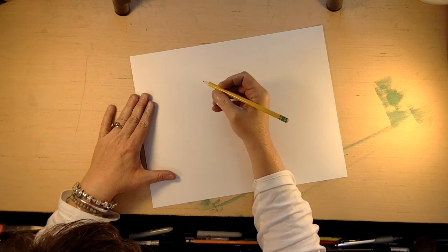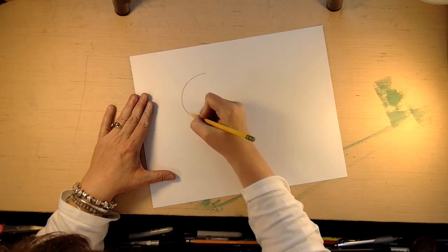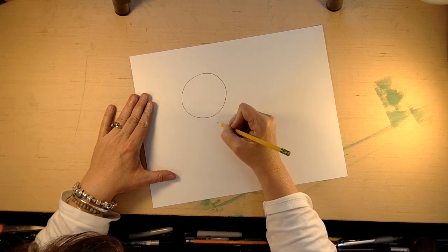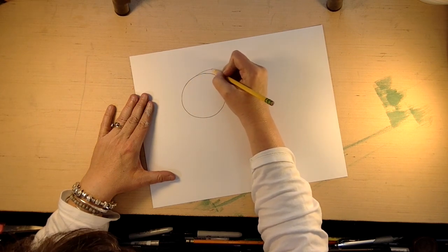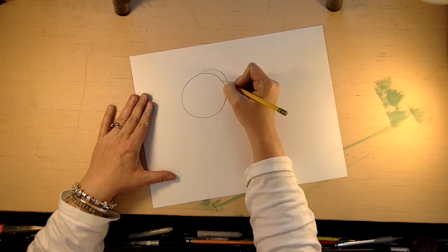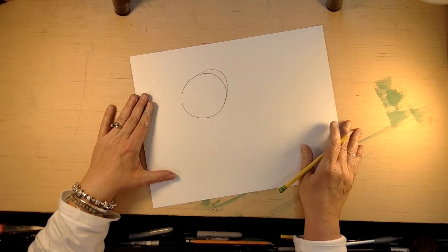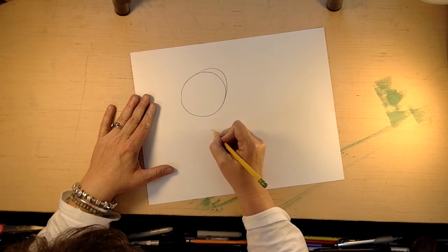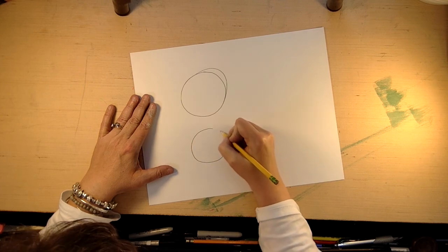So I want you to grab your paper and then the first thing we're going to do is draw a circle. Okay and then on top of that circle, just like remember we drew an egg kind of like this, we're gonna come around and add a little bump out on the side. Do you see that? And then we're also going to add another circle at the bottom, maybe a little smaller.